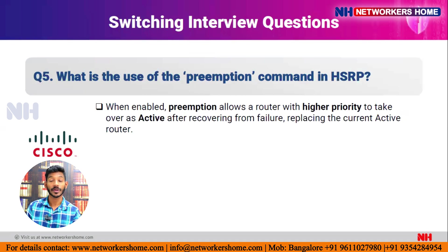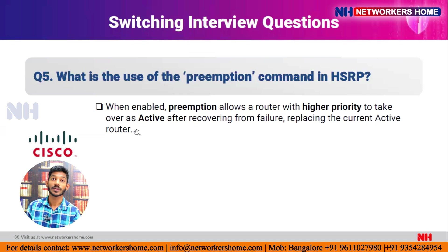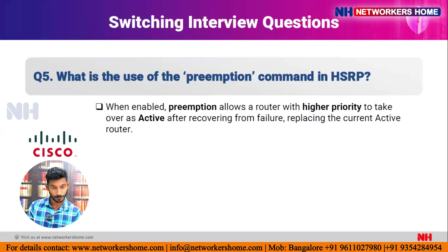Question five: what is the use of the preemption command in HSRP? In HSRP we have two routers — active and standby. When the active router goes down, the standby becomes active. Without preemption, R1 won't automatically return to active after recovering. With preemption enabled on R1, once R1 recovers it automatically becomes the active router again, replacing the current active. We give the preemption command only on the router we want to be active.